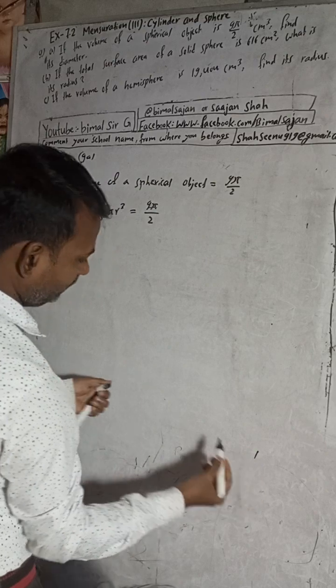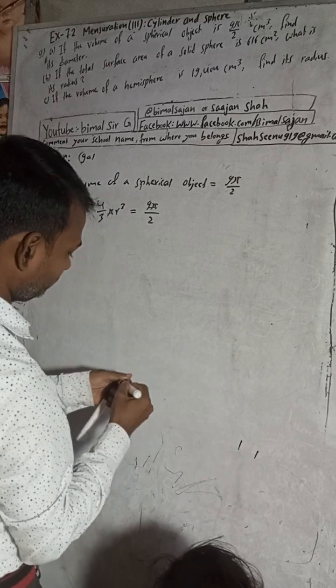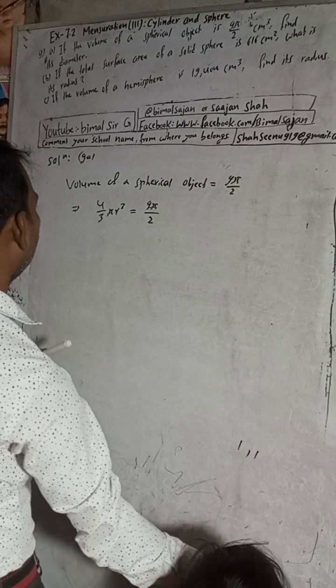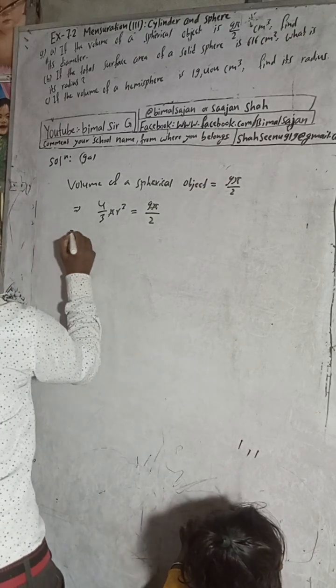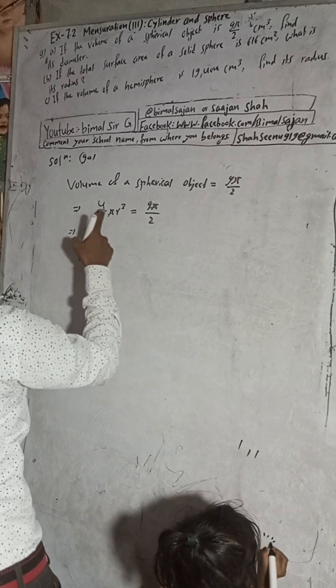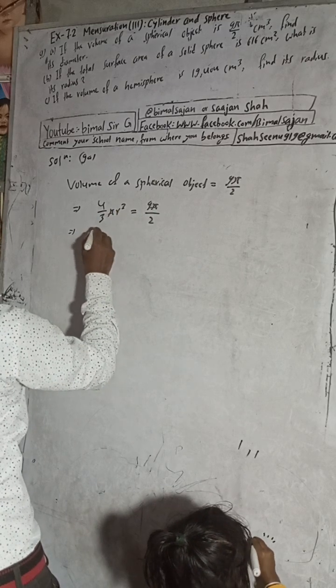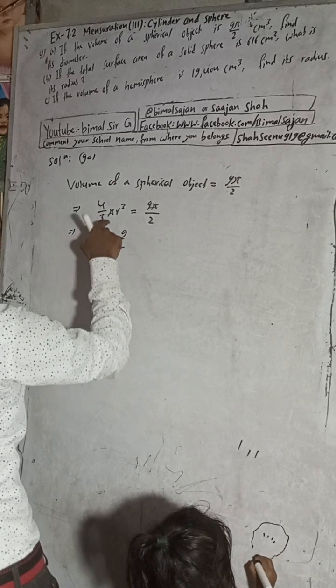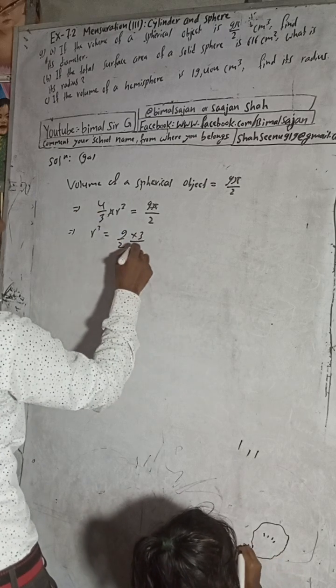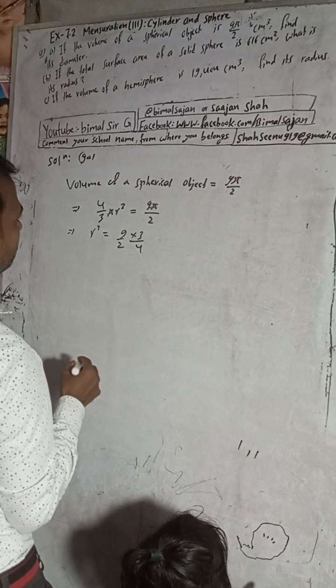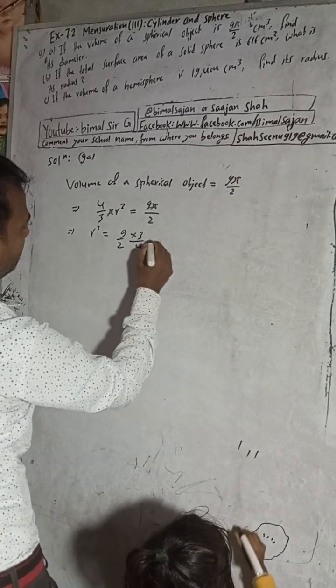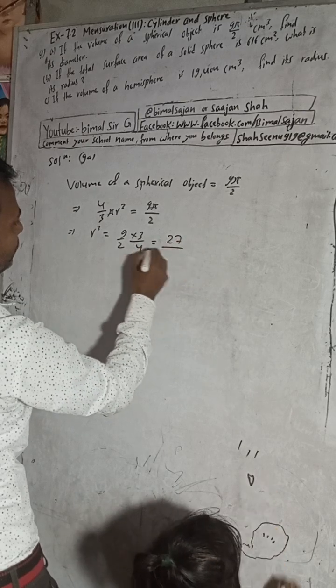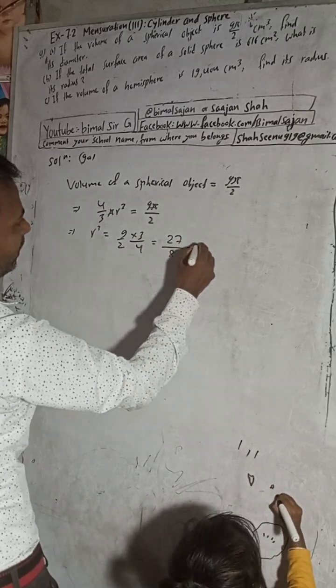From here you can see, this is now here, r³. Keep this r³ as it is. Now this is 9π/2, and this 3 will go up, and this 4 will come down. Now here, this is equal to how much, 9×3 are 27 by 4×2 is 8.